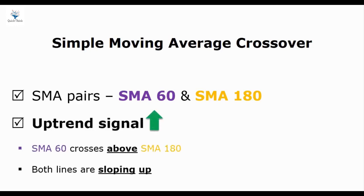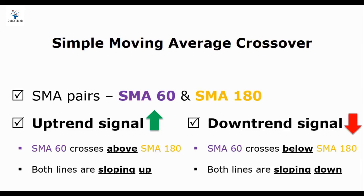Here's an uptrend signal: when the 60-day moving average crosses above the 180-day moving average and both lines slope upward, this means that your stock is in an uptrend. So if you follow the trend to buy the stock, there's a high chance that the stock price will keep going up and you can make a profit. On the other hand, when the 60-day moving average crosses below the 180-day moving average and both lines slope downward, this means that the prior uptrend is stopped and a downtrend will begin. In this case, you can sell your stock to get out of the market and consider buying it back when the trend reverses.